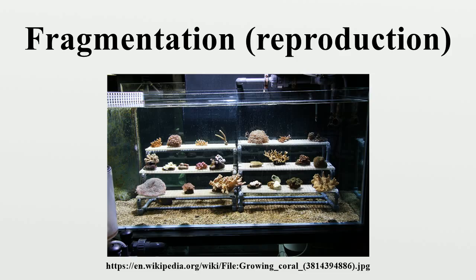In echinoderms, the process is usually known as fissiparity. Some species can intentionally reproduce in this manner through autotomy, and this method is more common during the larval stages. As a disadvantage, because fragmentation is a form of asexual reproduction, it does not produce genetic diversity in the offspring. Therefore, these organisms are more vulnerable to changing environments.